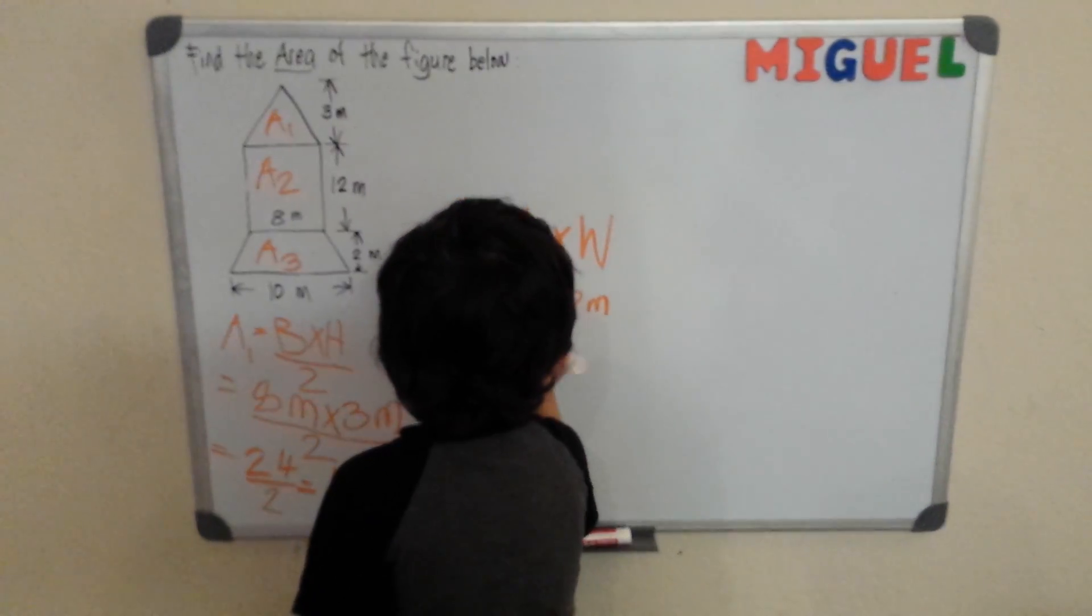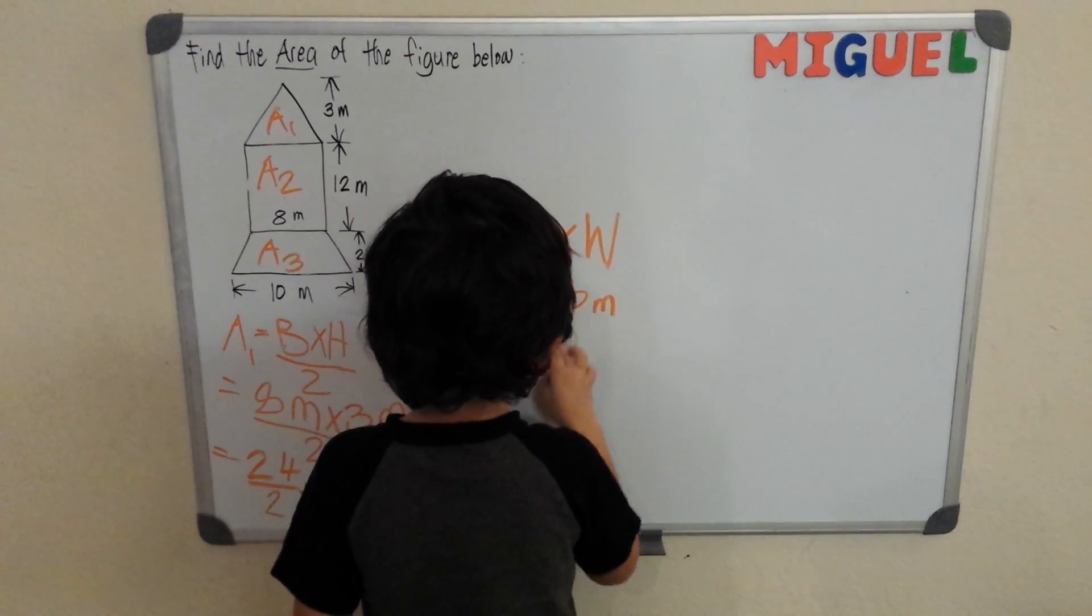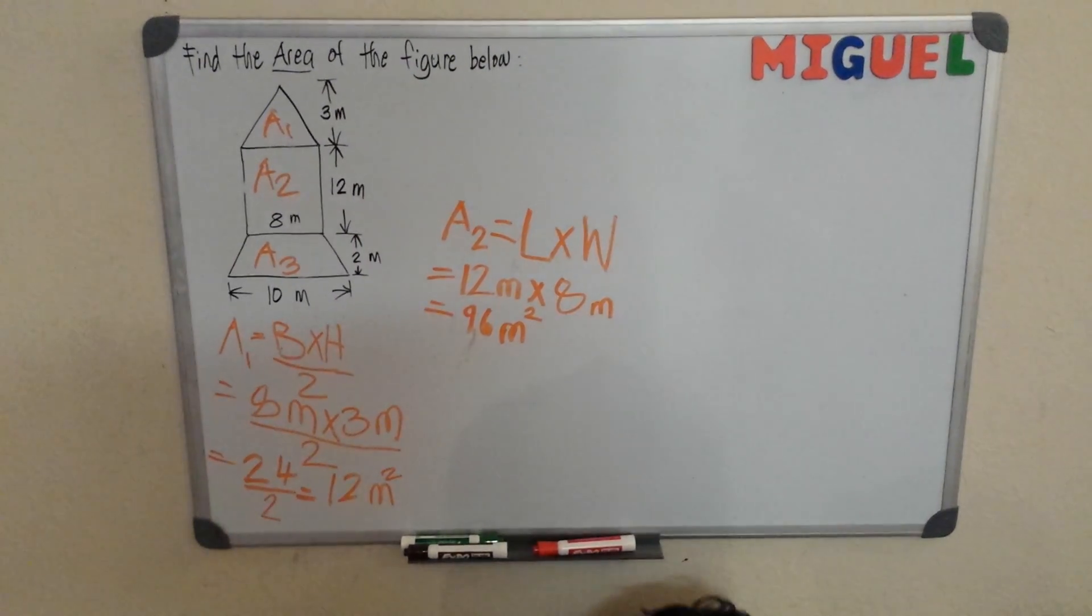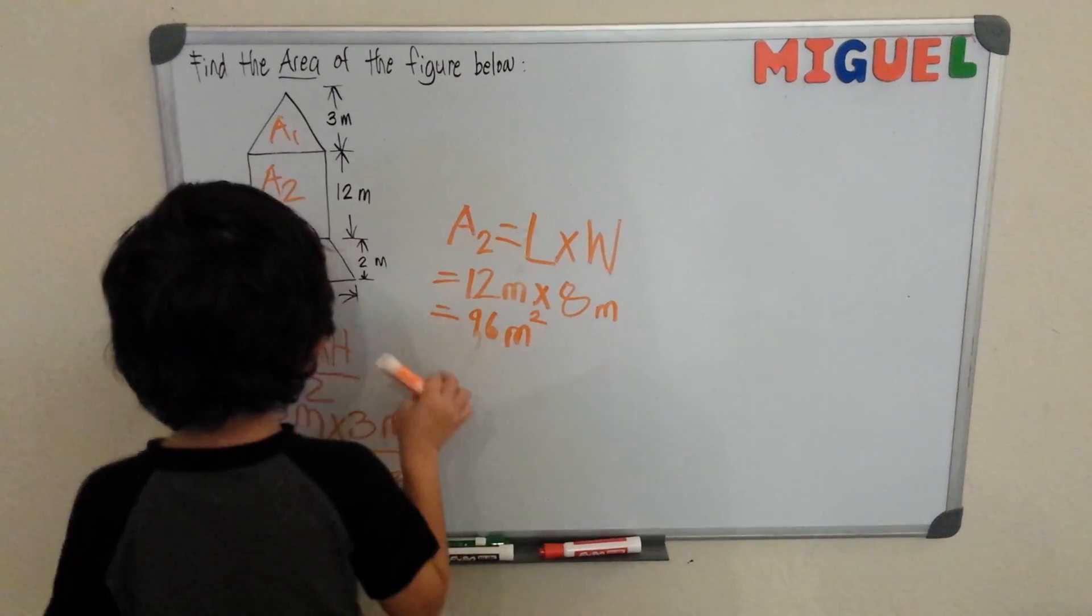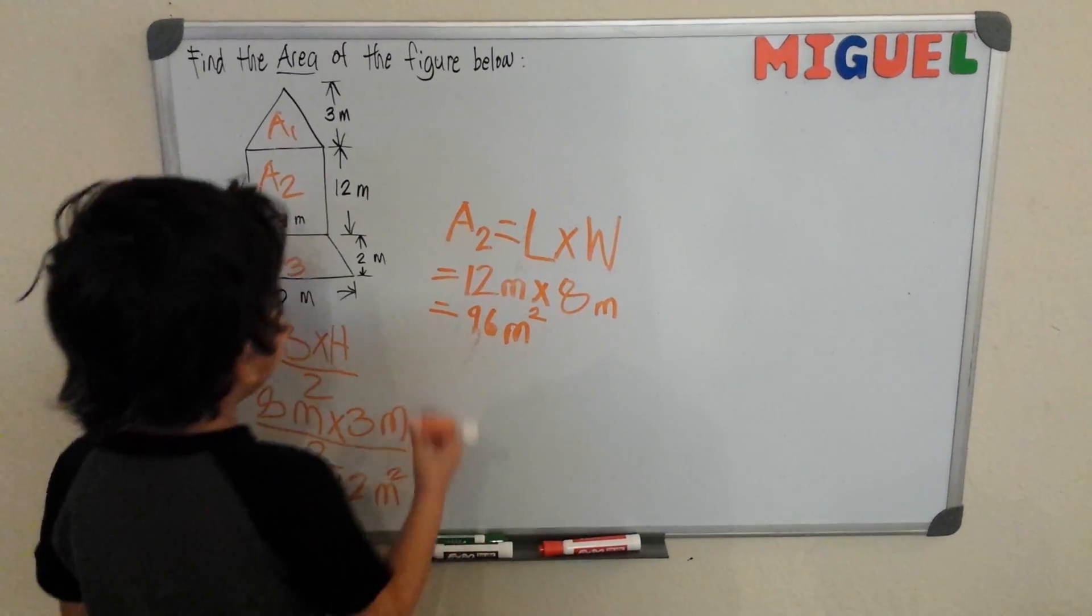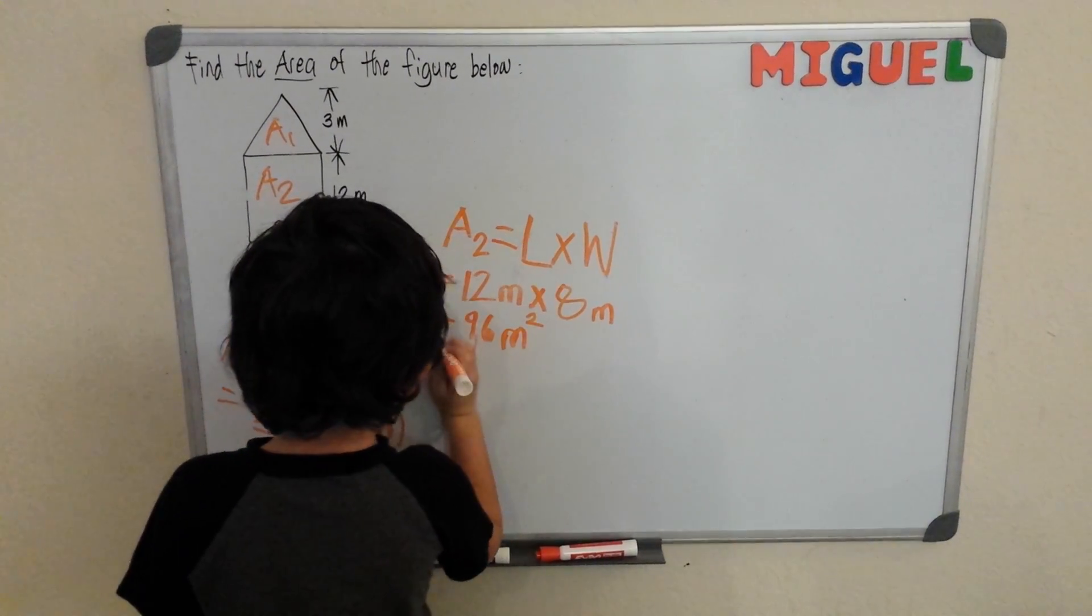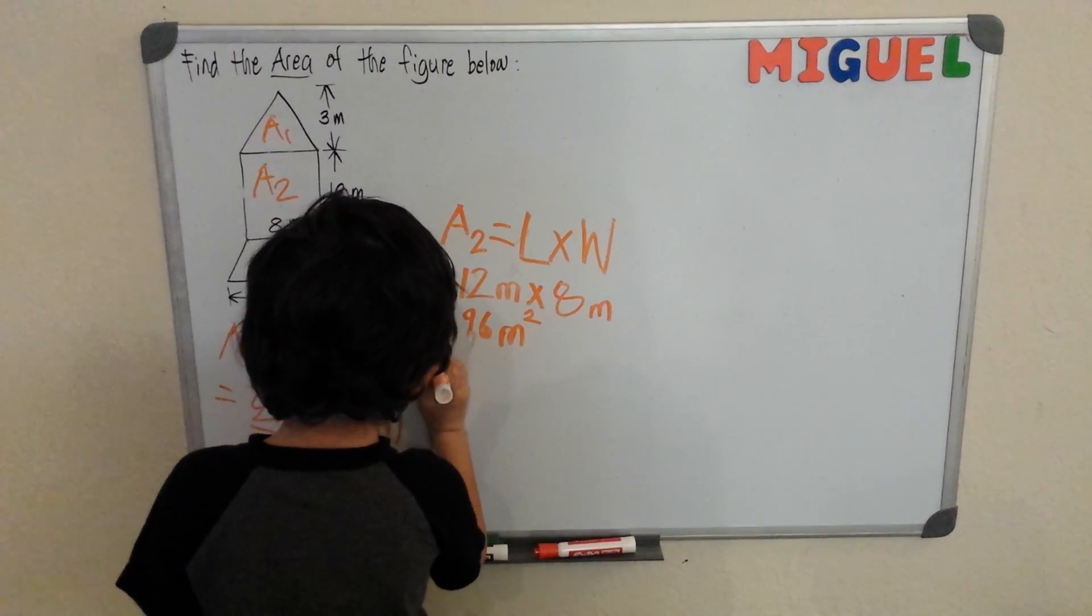That would be 96 meters squared. We squared it. It says area. Okay. Now our last one is a trapezoid. Our last one is the trapezoid or area 3.